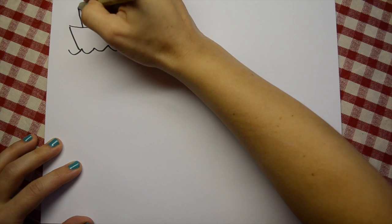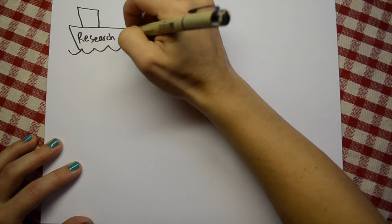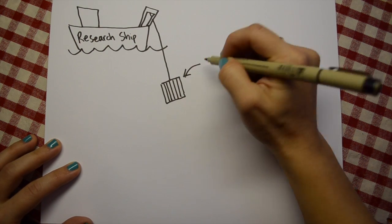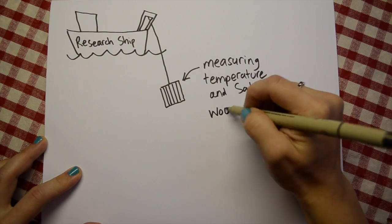One way to get temperature or salinity data is to go out on a ship and measure it directly. You could lower special instruments deep into the ocean to take measurements at different depths. The ship can sail across the ocean in straight lines, stopping every so often to take measurements.